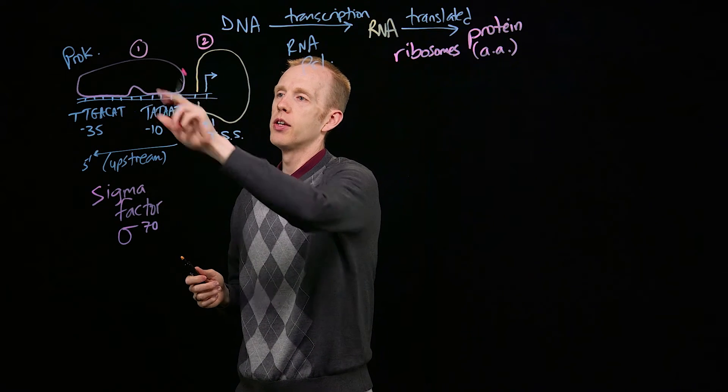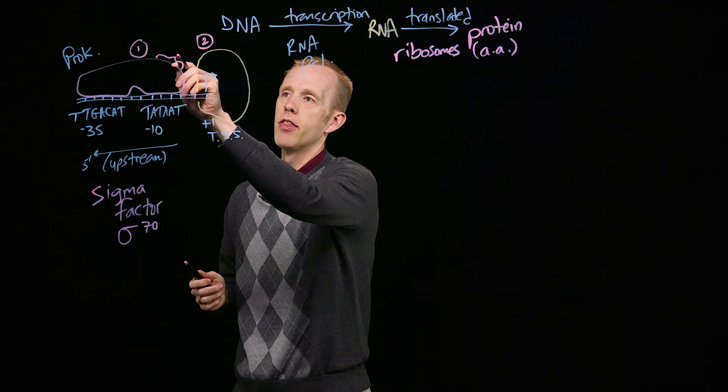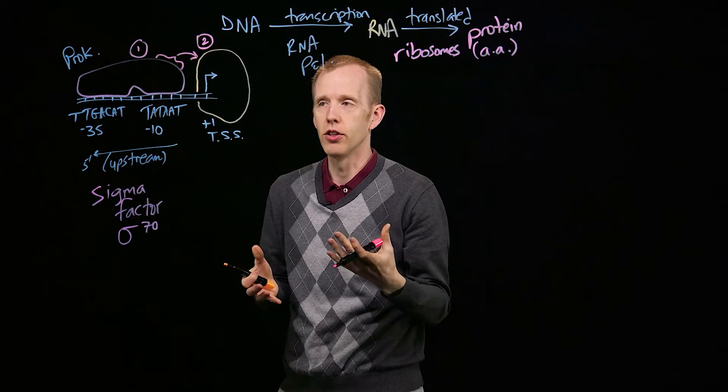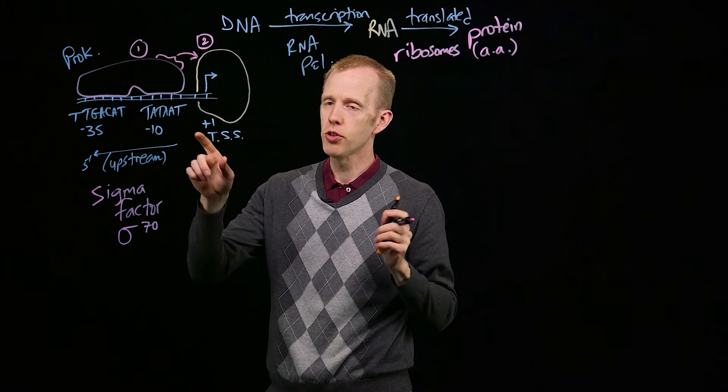The second thing that happens then is that RNA polymerase is recruited. And what that means is this sigma factor has another part of its surface here that physically associates with, is attracted to, part of RNA polymerase. And so, the first binding event, the sigma factor binds the DNA.